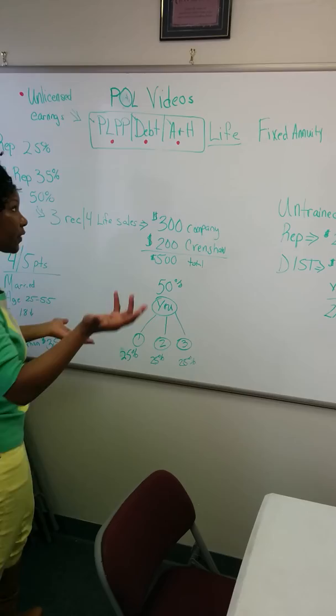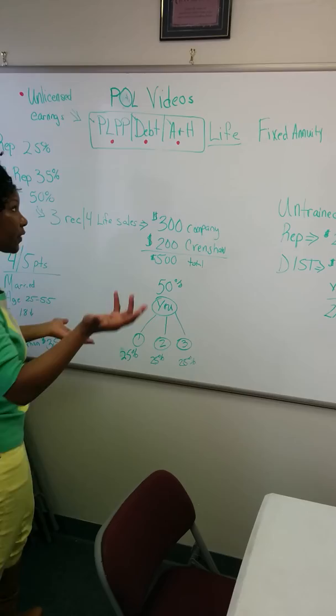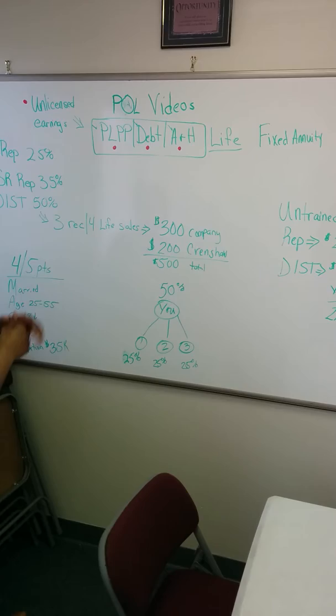So I have unlicensed earnings. And then once you get licensed, of course you can earn income for your life insurance and for selling fixed annuities. But you can't worry about that yet. You have to worry about getting licensed.